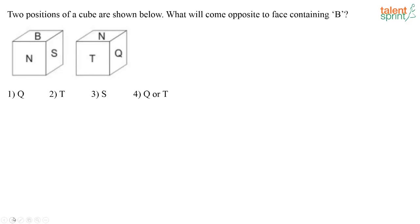Two positions of a cube are shown below. What will come opposite to the face containing B? Here they have given the cube only in two angles. Generally we get three, and very easily we are able to find out. Here they have given us only two positions of the cube. So how will you do this?